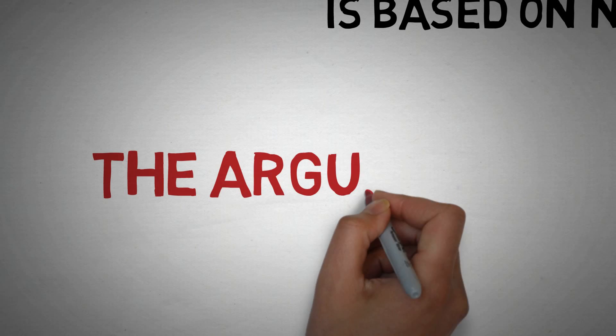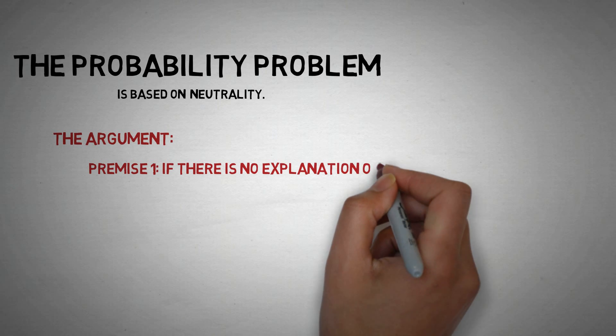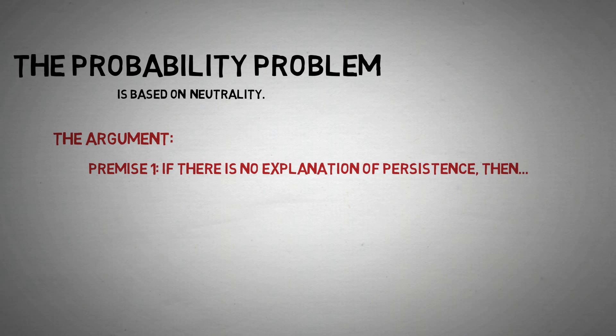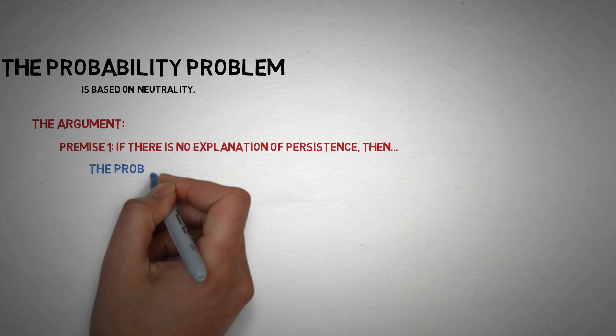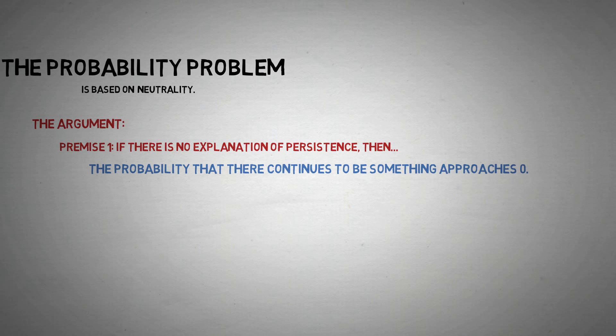We can state the probability problem in terms of the following argument. Premise 1. If there is no explanation of persistence, then the probability that there continues to be something, moment after moment, approaches zero as the number of moments approaches infinity.